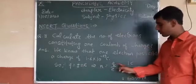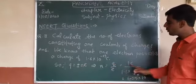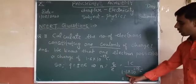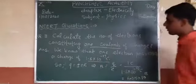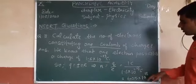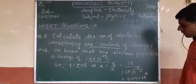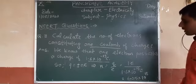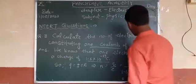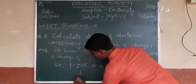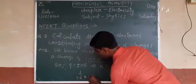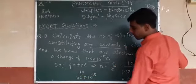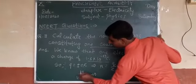We want to find n, so n = Q/e. Here Q is one coulomb, and e is 1.6 × 10⁻¹⁹ coulombs. Coulombs cancel, and solving this gives n = 6.25 × 10¹⁸. To solve: 1 divided by 1.6 × 10⁻¹⁹ — remove the decimal by multiplying, and simplify to get 6.25 × 10¹⁸ electrons.